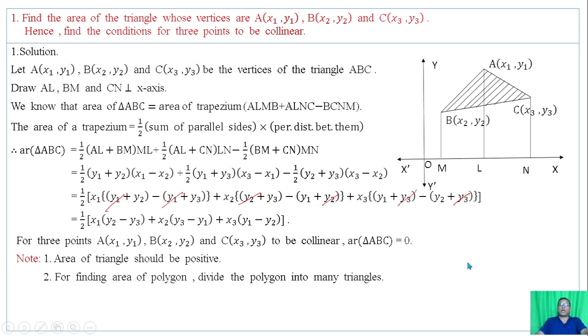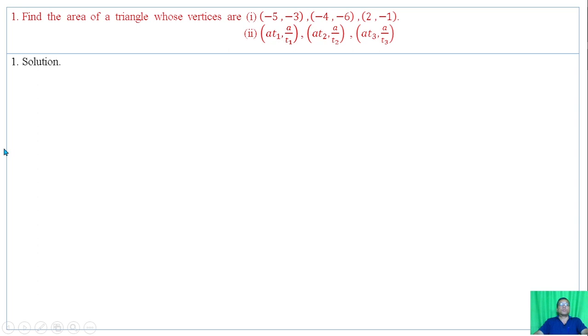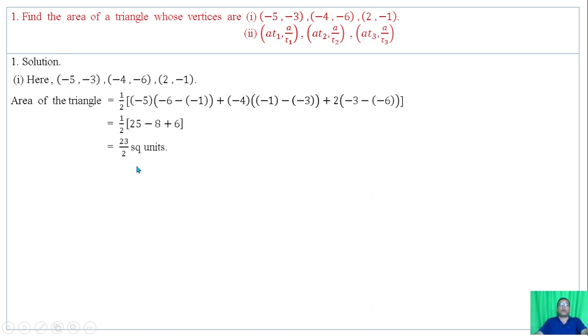Example 1: Find area of the triangle with vertices at the given points. Using the formula with x1, y1, x2, y2, x3, y3, we calculate half times x1(y2 minus y3) plus x2(y3 minus y1) plus x3(y1 minus y2). Substituting the respective values and simplifying, we have 23 by 2 square units.